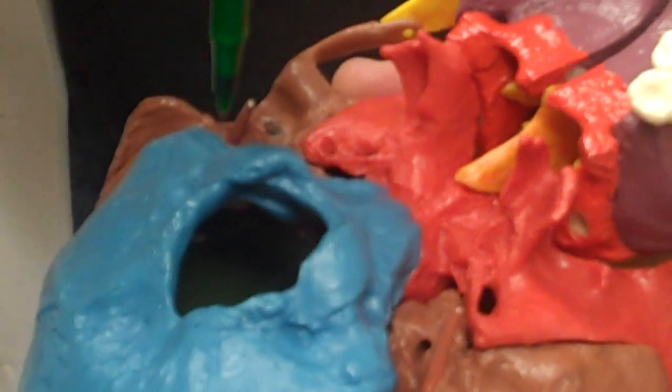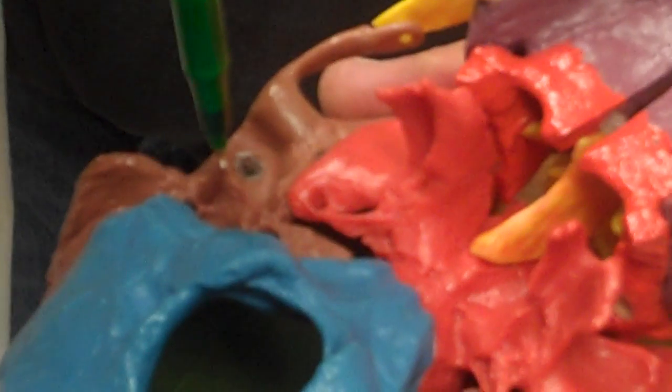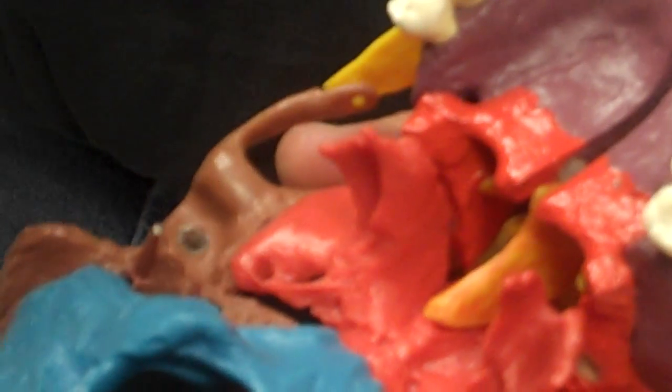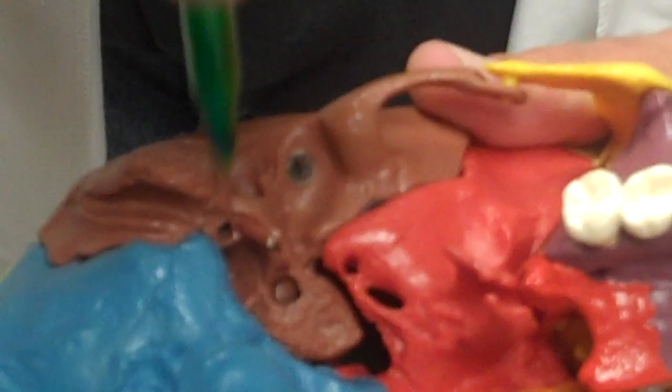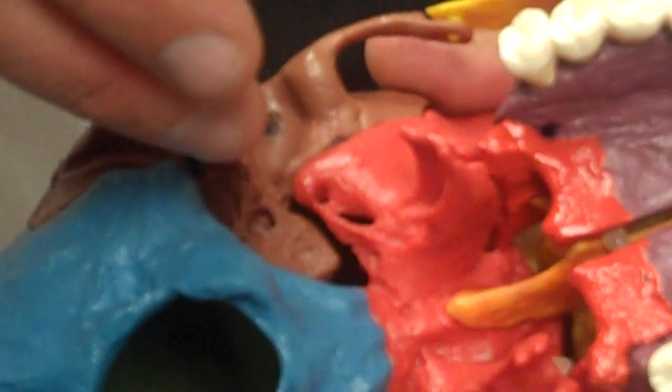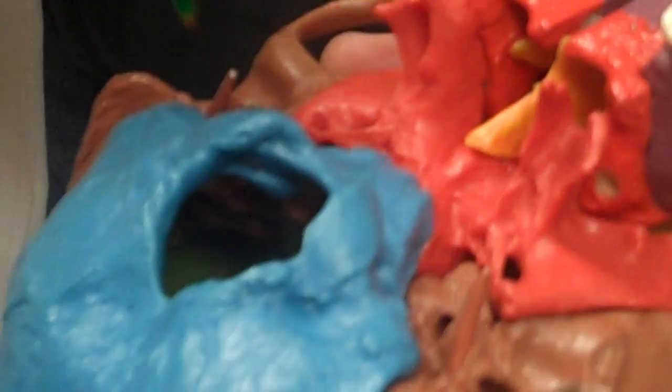Then we have, right in here, in between the styloid process and the mastoid process, stylomastoid foramen. Sir, can you point it slightly so... Okay. Sorry. That's one that... What's that again, sir? That is the styloid mastoid foramen. So it's a little bit of a hole in between these two processes.